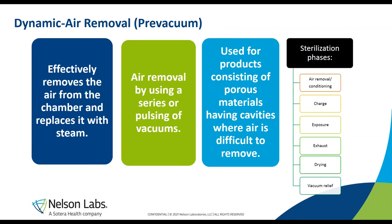Pre-vacuum steam sterilization is referred to as dynamic air removal. There is also a cycle type called steam flush pressure pulse, which is also dynamic air removal but does not employ vacuums. With pre-vacuum, as the name implies, vacuums effectively remove air from the chamber, replacing it with steam through a series of steam pulses and vacuums. It's used for products with porous materials and cavities where air is difficult to remove.